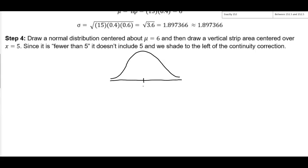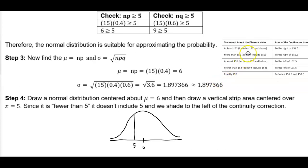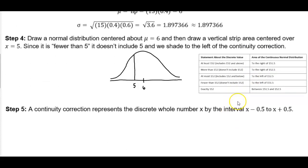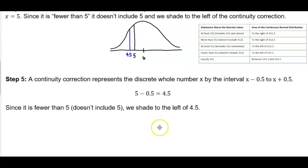So there's our bell curve. We know the mean is 6, and x is going to equal 5, so here is going to represent the value of 5. We're looking for the continuity correction. The continuity correction represents a discrete whole number x by the interval from x minus 0.5 to x plus 0.5. Since fewer than means we do not include 5, we take 5 and subtract 0.5 to get 4.5. We place 4.5 on the curve and shade to the left, because that's the area or probability we're looking for.